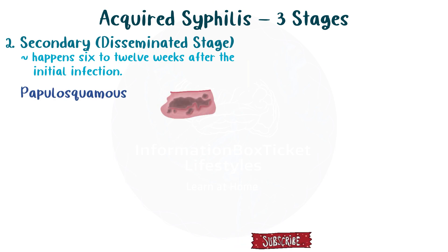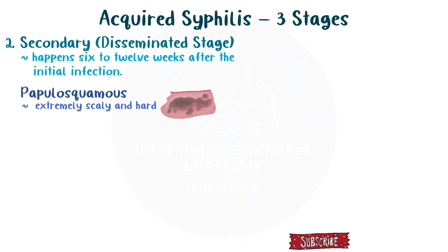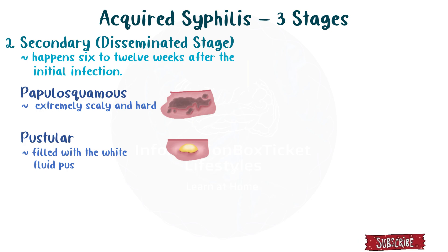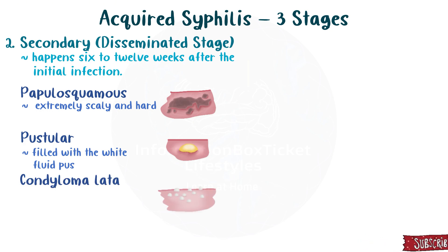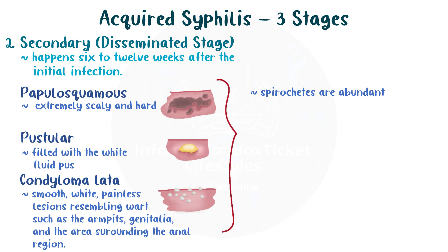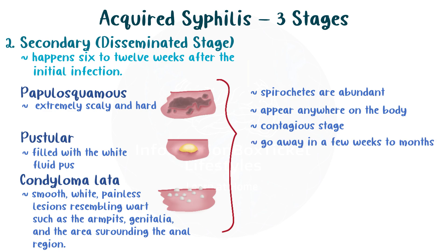Sometimes these rashes are papulosquamous, which is when they are extremely scaly and hard, and other times they are pustular, which is filled with white, fluid pus. Furthermore, there may be a condition known as condyloma lata, which is characterized by smooth, white, painless lesions resembling warts that develop on moist places, such as the armpits, genitalia, and the area surrounding the anal region. Because spirochetes are abundant in the lesions that result from these rashes, secondary syphilis is the most contagious stage. Secondary syphilis rashes often go away in a few weeks to months.